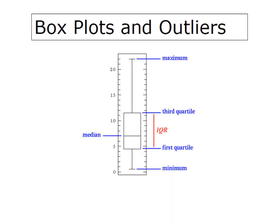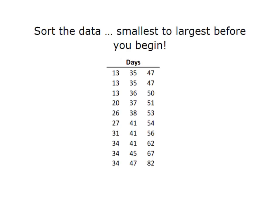Hey everybody, it's Professor Williams and we're going to construct a box plot and use it to check for outliers. The first thing that we have to do is sort our data, always from the smallest to the largest before you begin. My data is the number of days and I've got it sorted for you here.